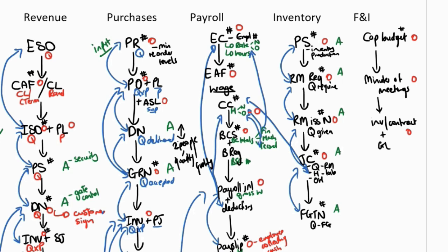Looking at the specific controls: authorization takes place at the capital budget, the minutes of the meetings, and the invoice or contract — all authorized by top management. Segregation of duties is not applicable here because these are not recurring transactions; top management authorizes throughout. For reconciliation, what was authorized in the minutes must be reconciled to the capital budget, and the invoice and contract must be reconciled back to the minutes of the directors' meeting.